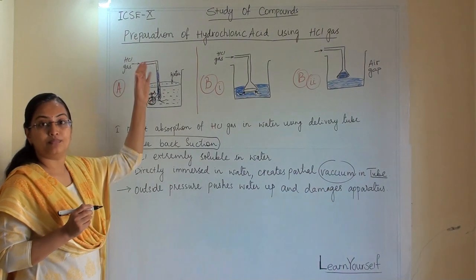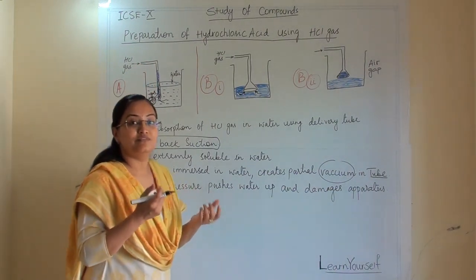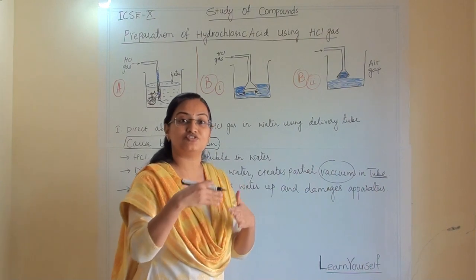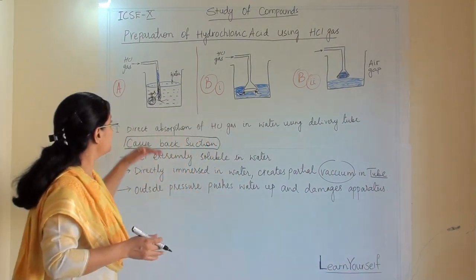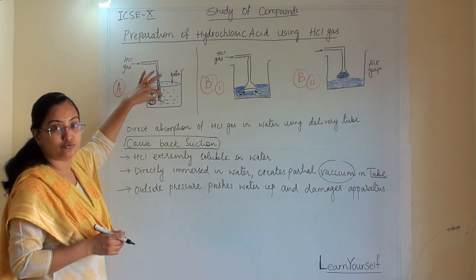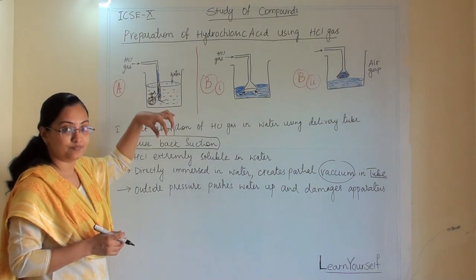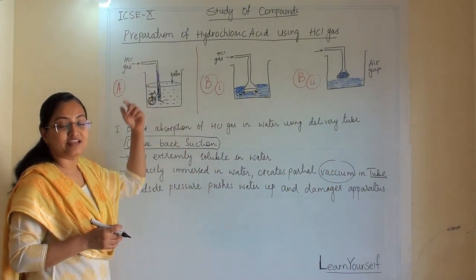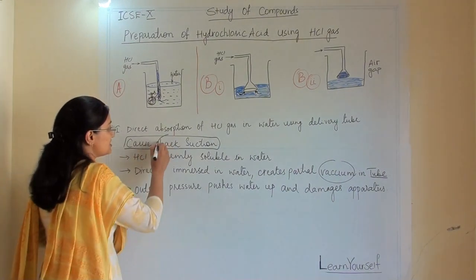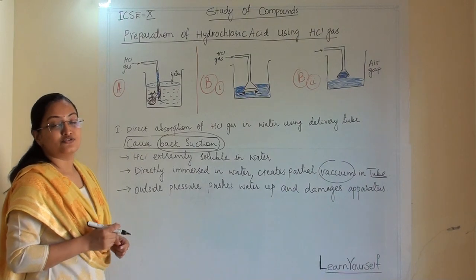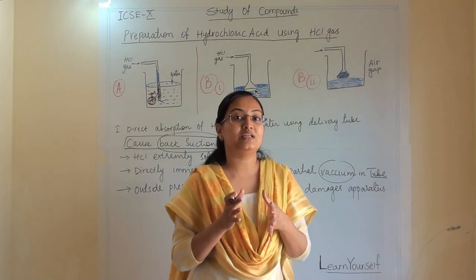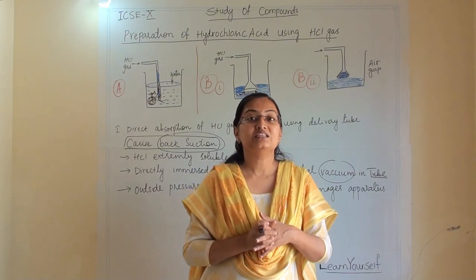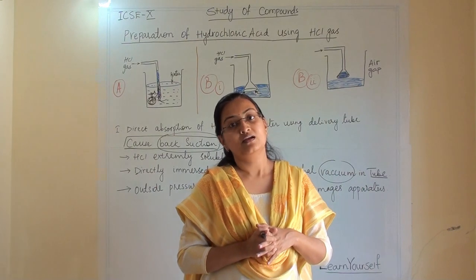As the water rapidly goes up, this gas delivery tube will be damaged because of the force of water and the speed at which the water rises. When we directly add a gas pipe or delivery tube into the water, the vacuum created causes the water to go up and damage the apparatus. This process is known as back suction. When an assembly is arranged with the delivery tube directly immersed in water, it will create back suction, so this process is not practically useful to make hydrochloric acid.